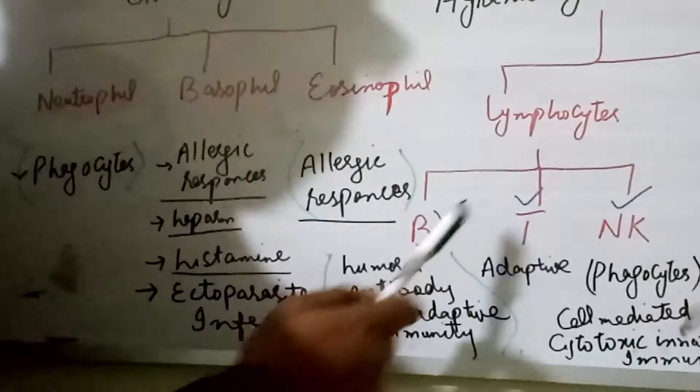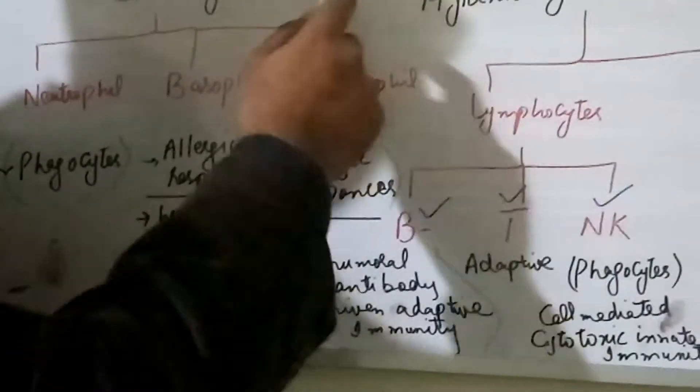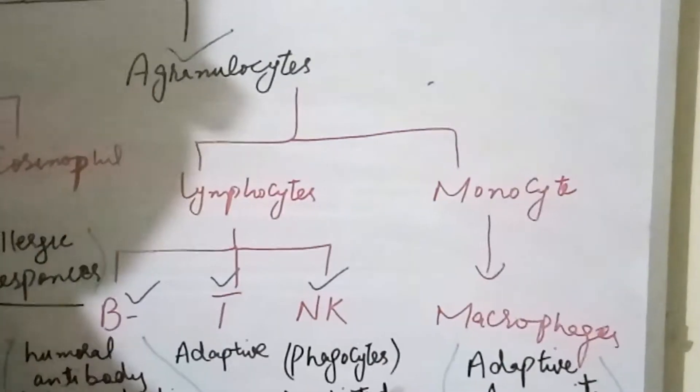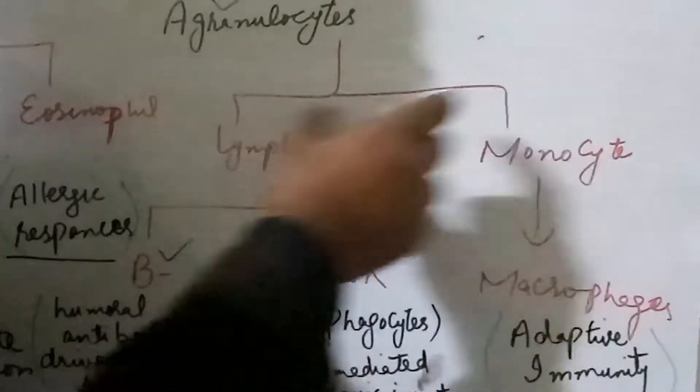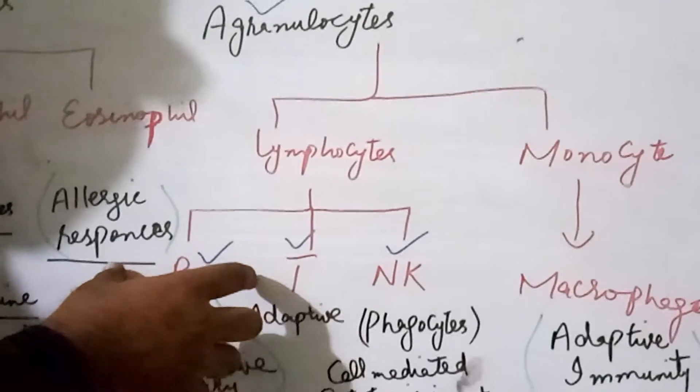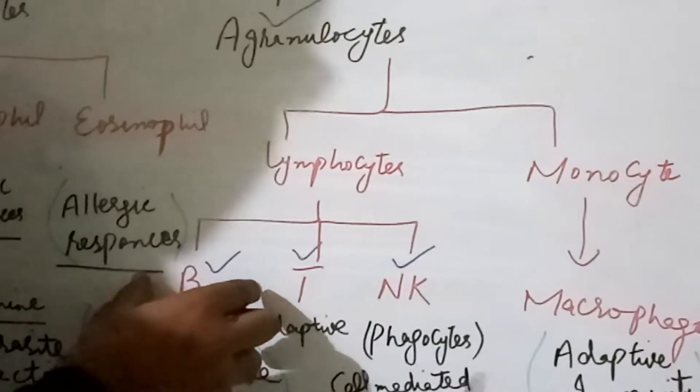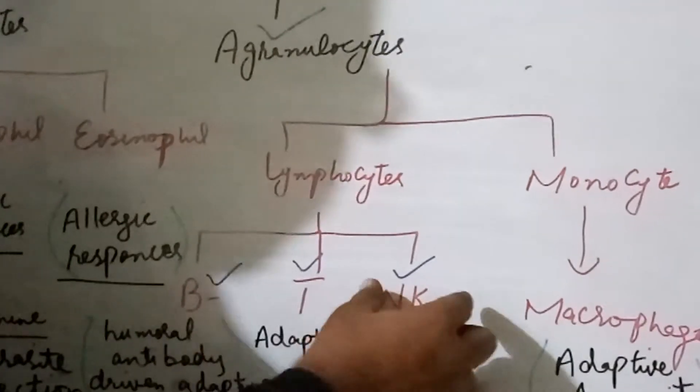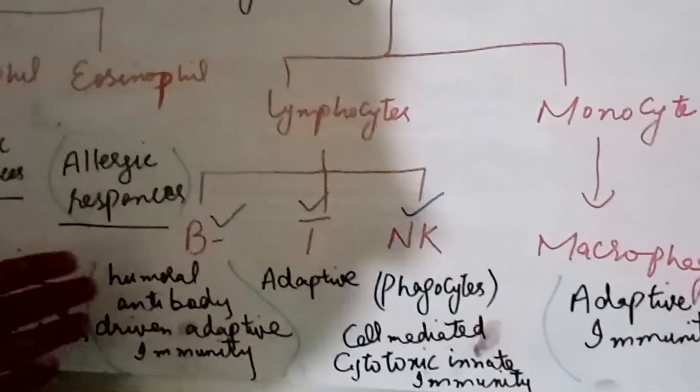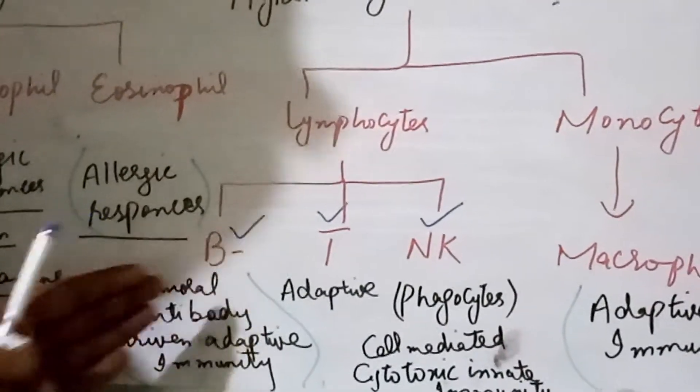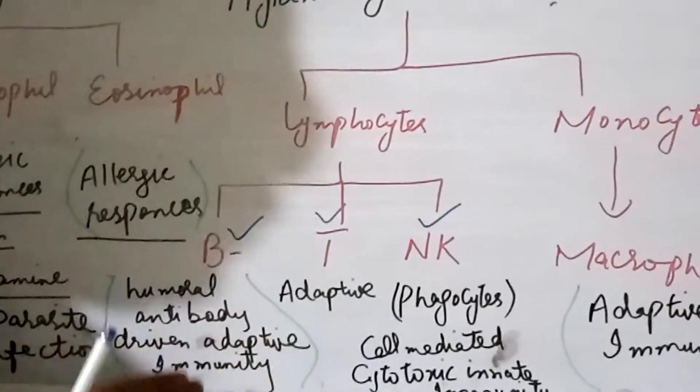Now, there is another type of white blood cells which is agranulocytes. Agranulocytes are further subdivided into two types lymphocytes and monocytes. Lymphocytes are further subdivided into three types that is B lymphocytes, T lymphocytes and natural killer cells. B lymphocytes are basically used for the humoral antibody-driven adaptive immunity.